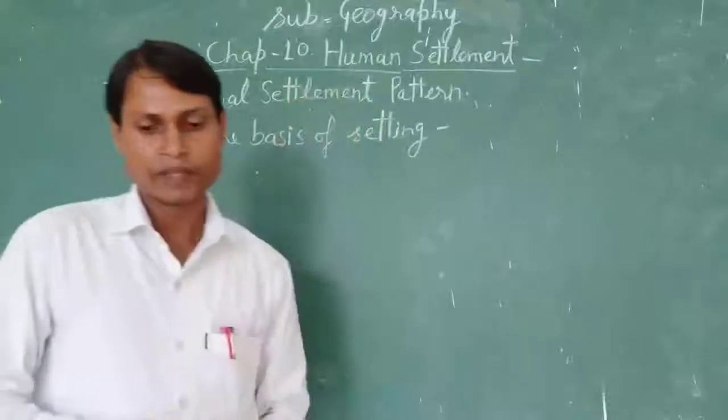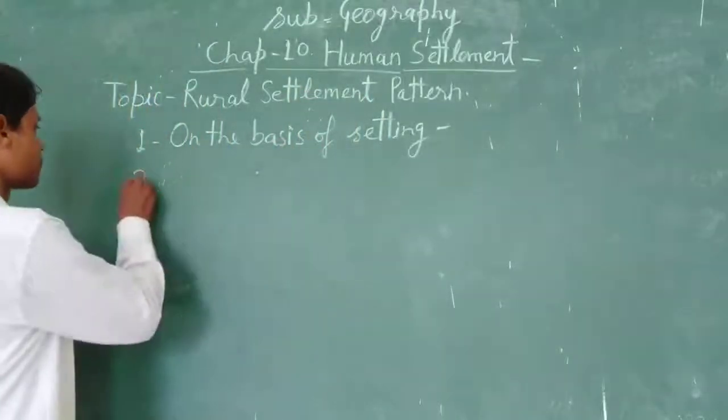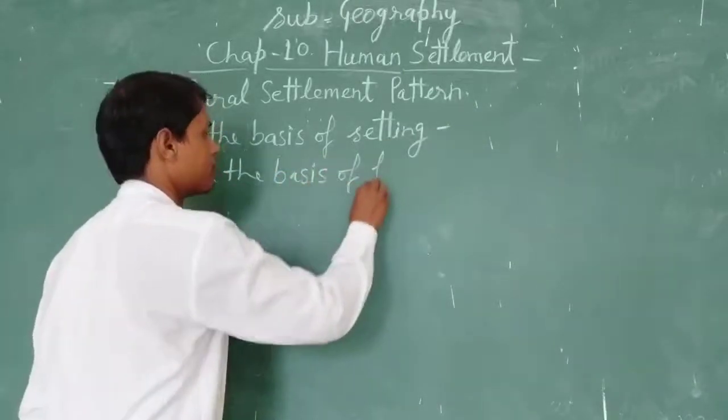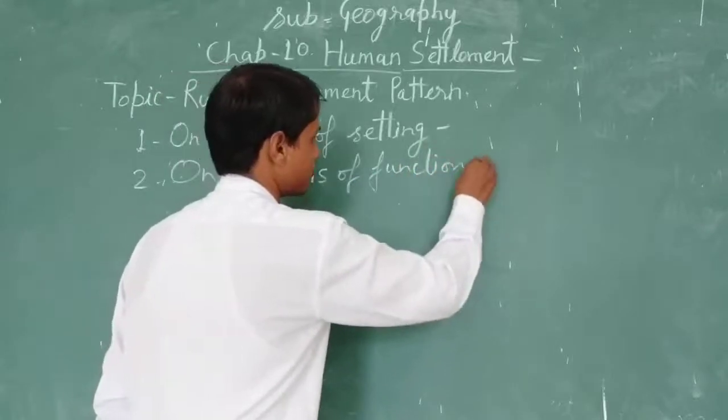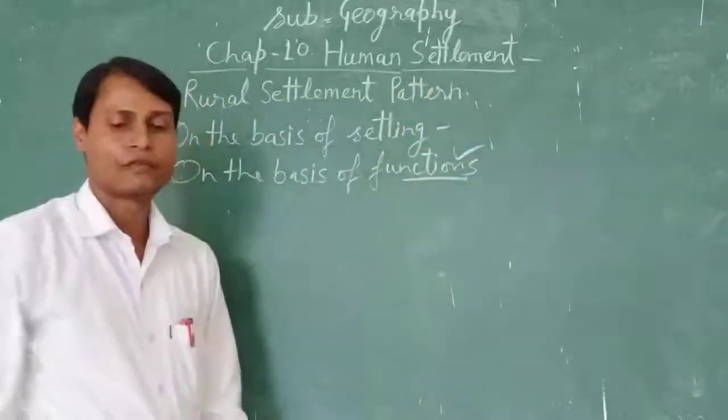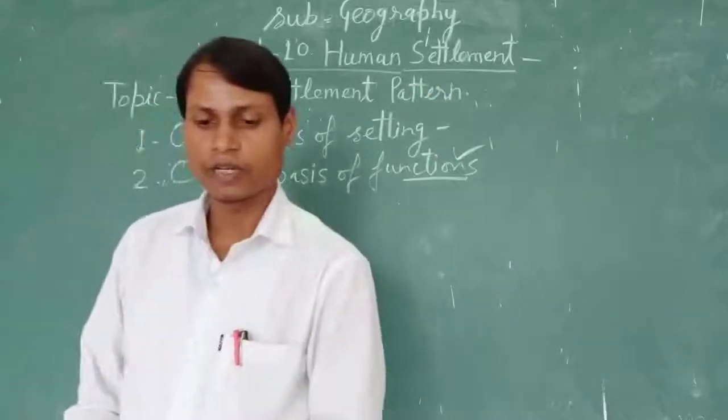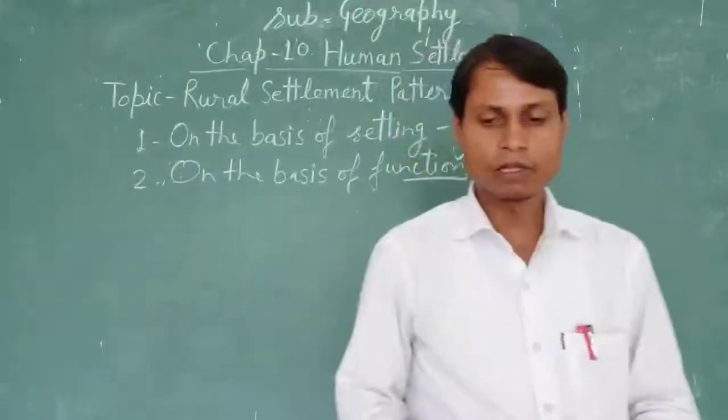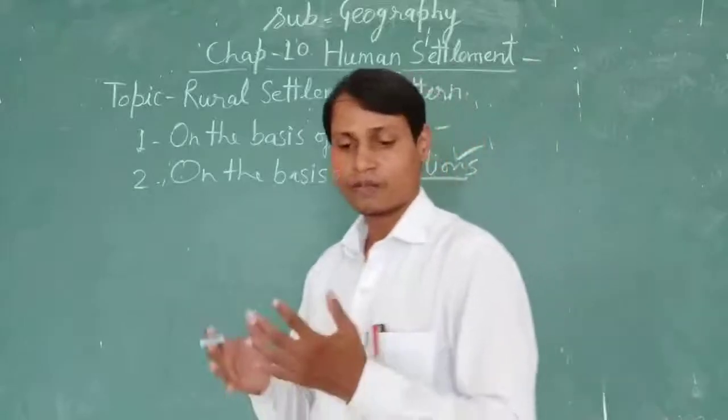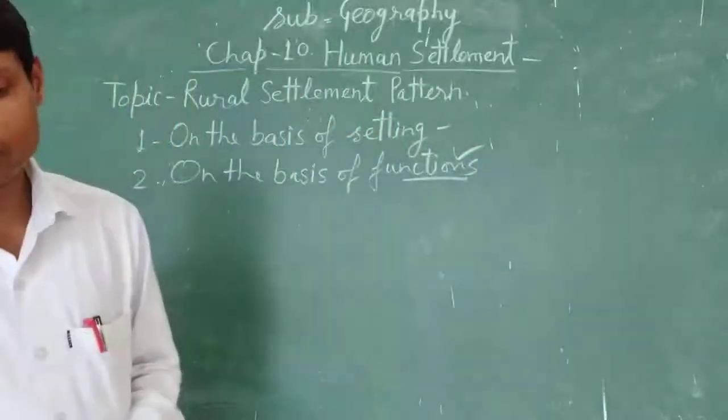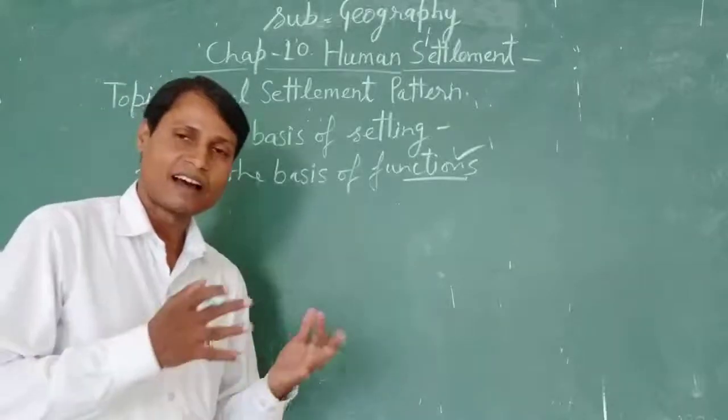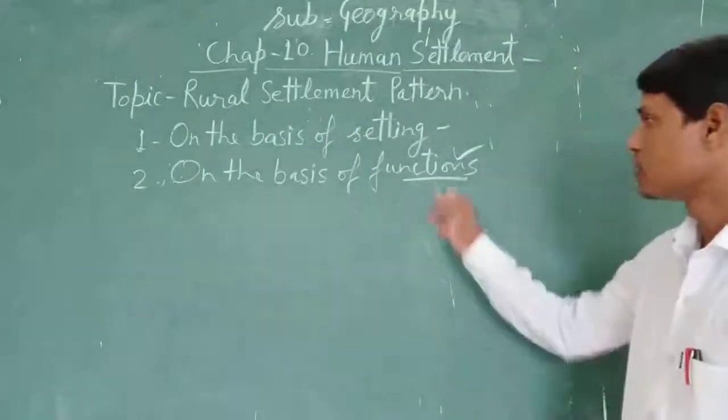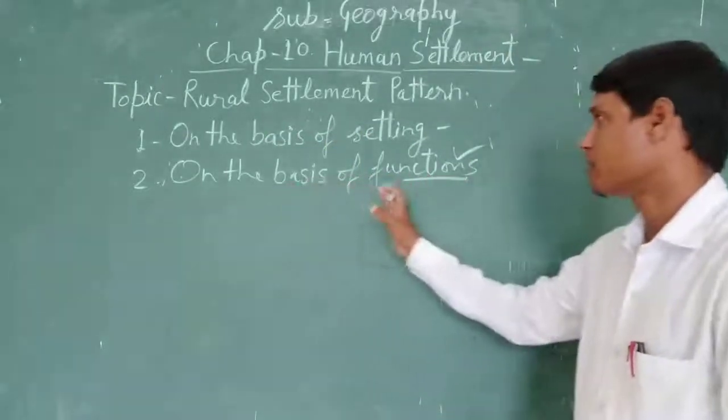Second one, on the basis of functions. Function means they are farming, they are farmers and engage in the farming areas. Also they are opening their industry, workshop, plumber, lumber, carpenter, craftsman, artisan, according to which they can make their houses. It means, basis of the function.